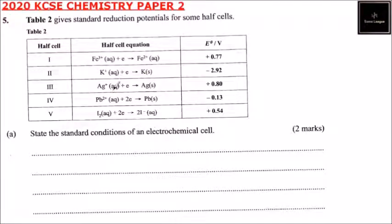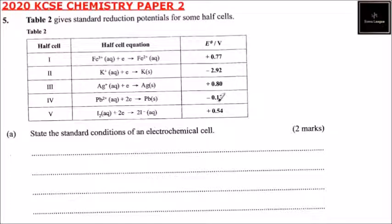Half cell three: silver ions in aqueous solution gain one electron and become silver solid. The voltage is positive 0.80. Half cell four: lead ions in aqueous form gain two electrons and become lead solid. The voltage is minus 0.13. Half cell five: iodine in aqueous form gains two electrons and becomes iodide ions in aqueous form. The voltage is positive 0.54.